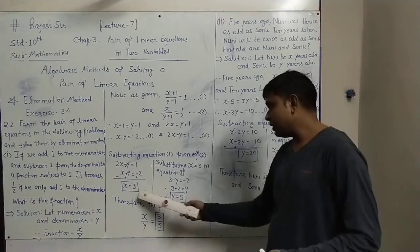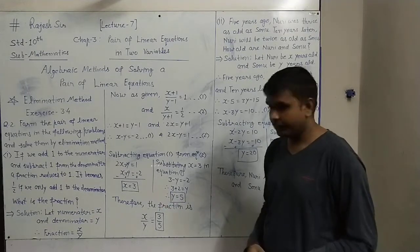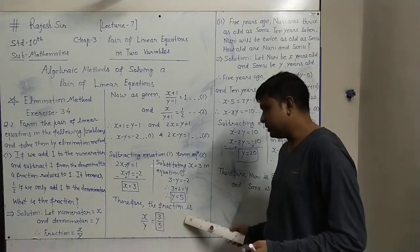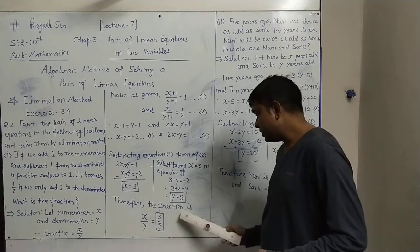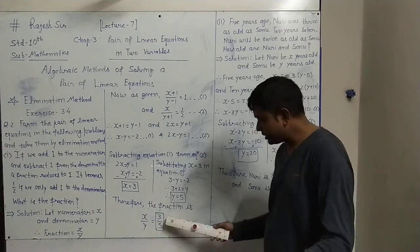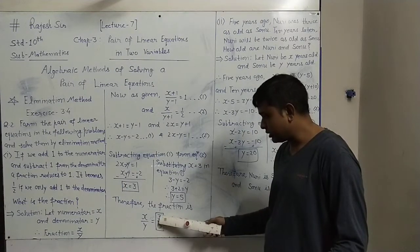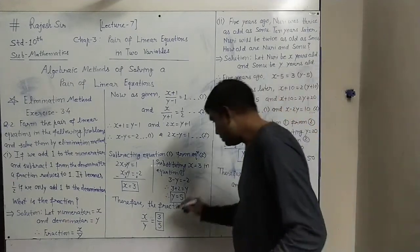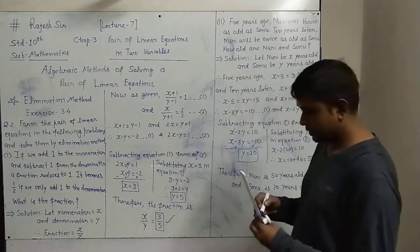So x = 3 and y = 5. The fraction is x upon y. Placing the values, x is 3 and y is 5, so the fraction is 3/5. This way we get the fraction by the elimination method.